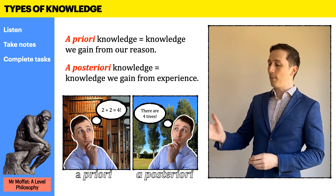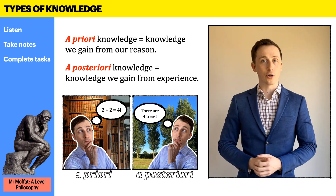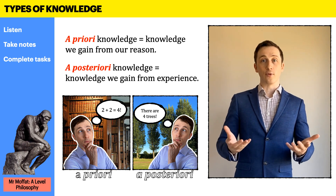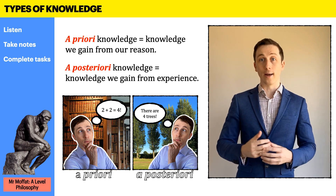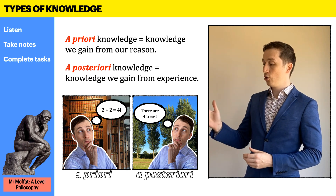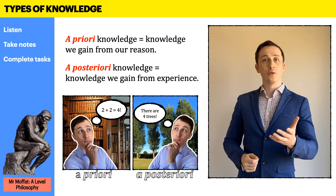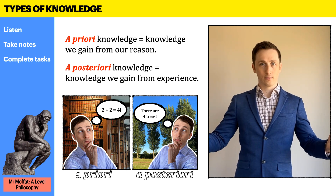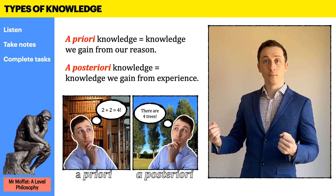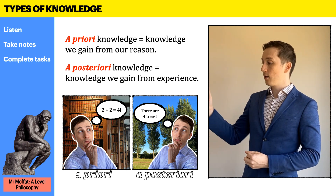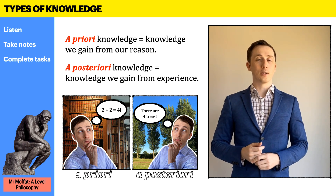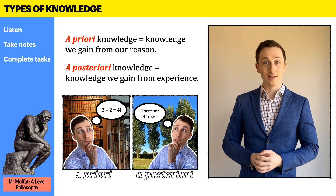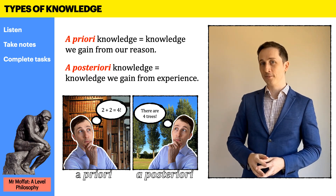If we think about two propositions, we can see how they differ in terms of how that knowledge is acquired. 'Two plus two equals four' is known from reason alone — we do not need to check anything in the outside world. Whereas 'there are four trees in that field' is something we can only know if we check with our senses. That's the difference.